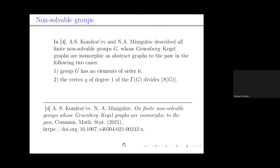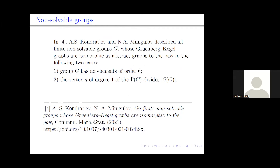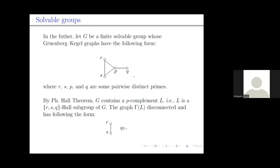Regarding the second step: Anatoly Schmidt and I described all finite non-soluble groups G whose Greenberg-Kegel graph is isomorphic as an abstract graph to the paw, in the following two cases. The first case: the group G has no elements of order six. The second case: the vertex q of degree one of Γ(G) divides the order of the soluble radical of G.